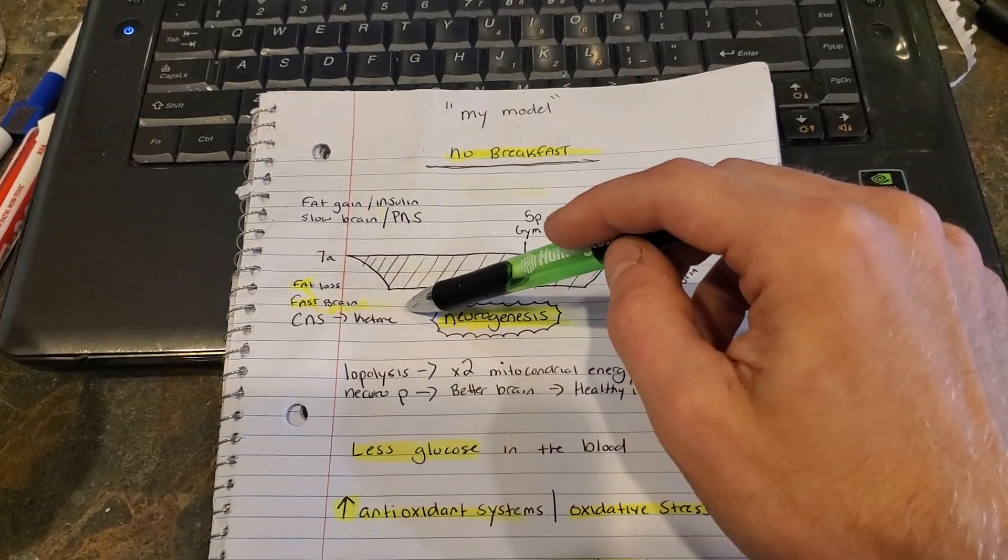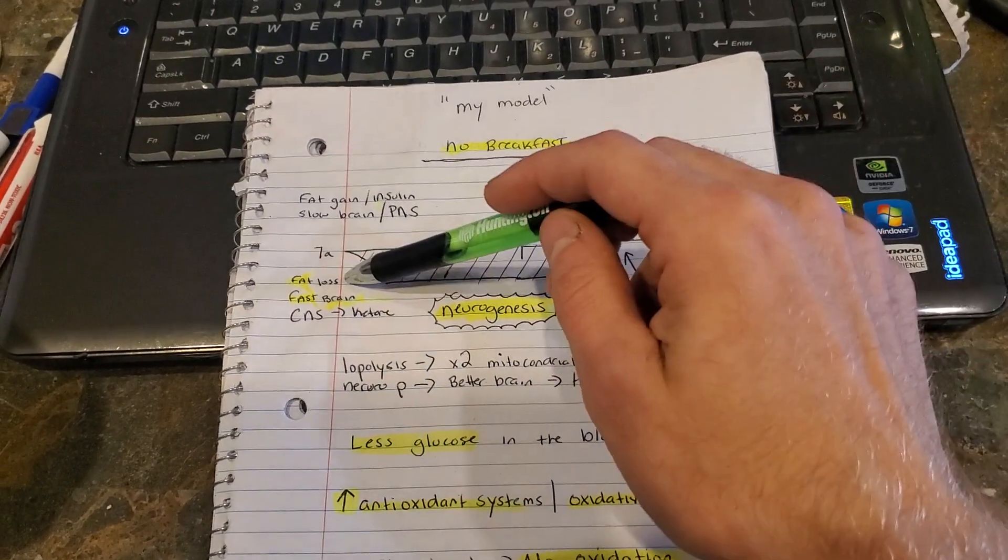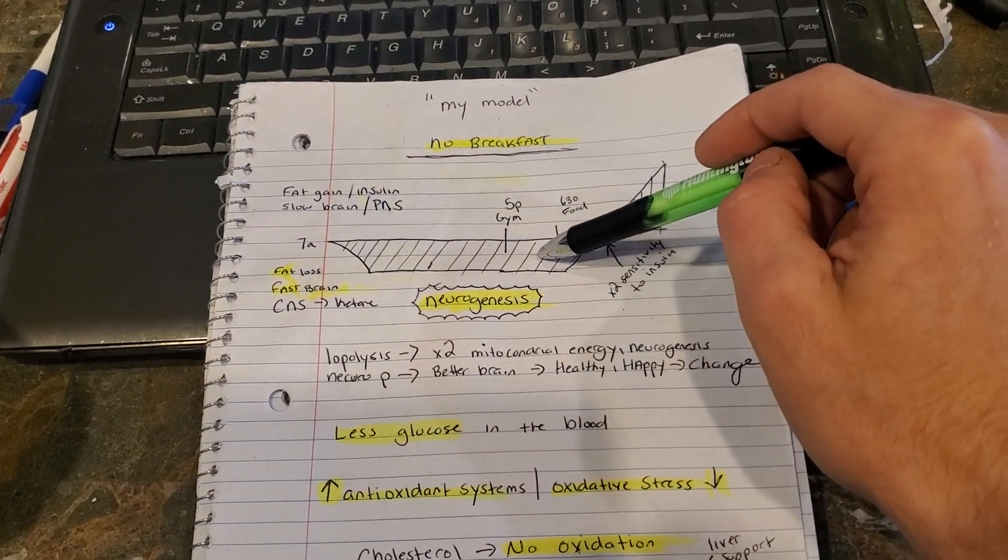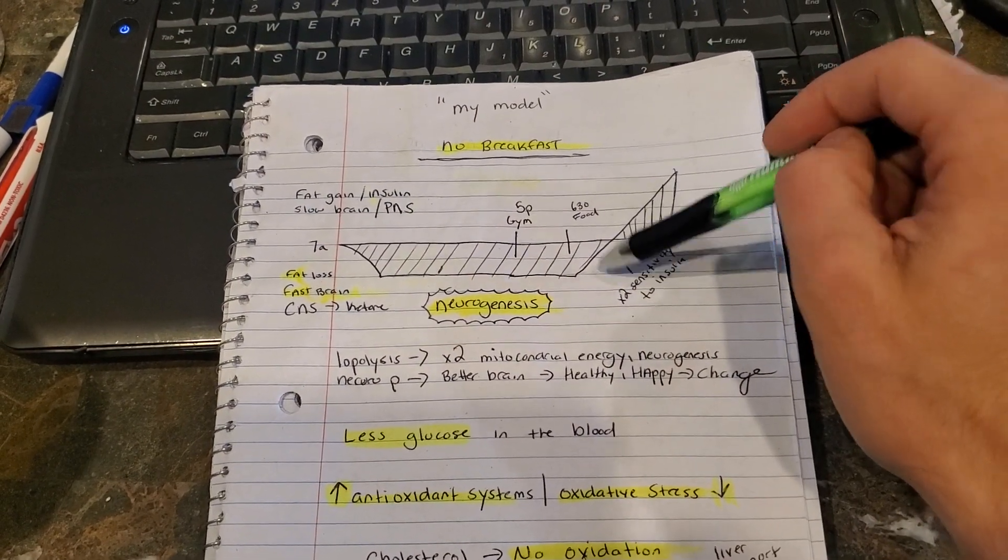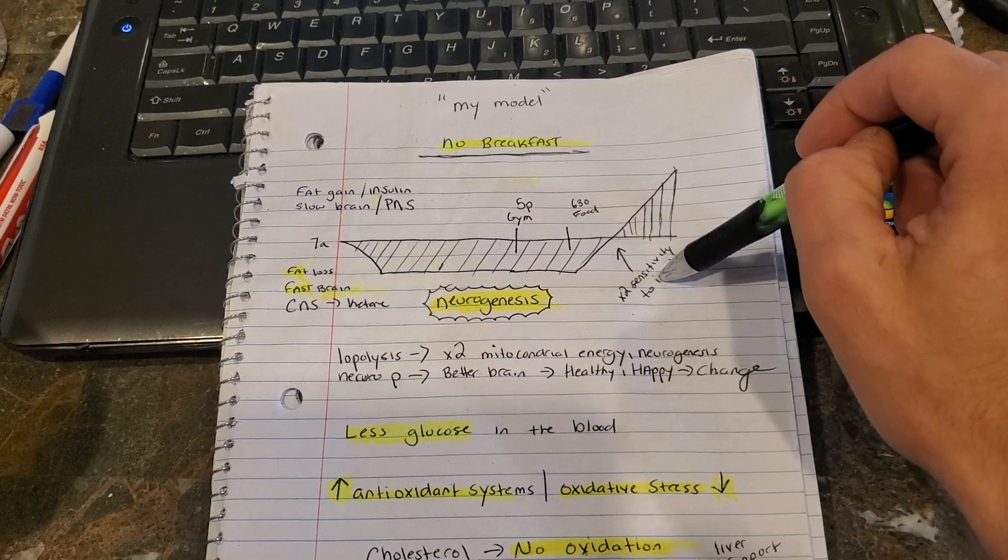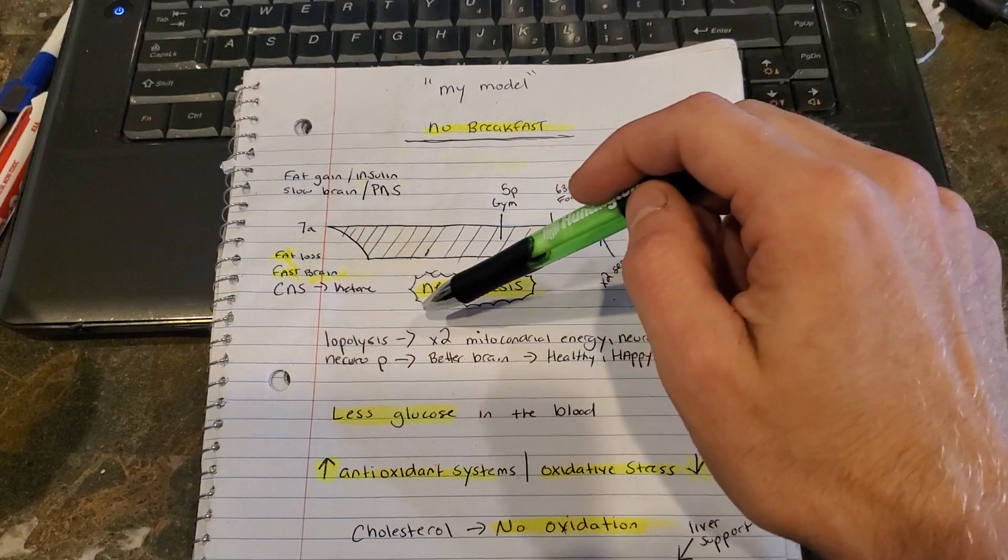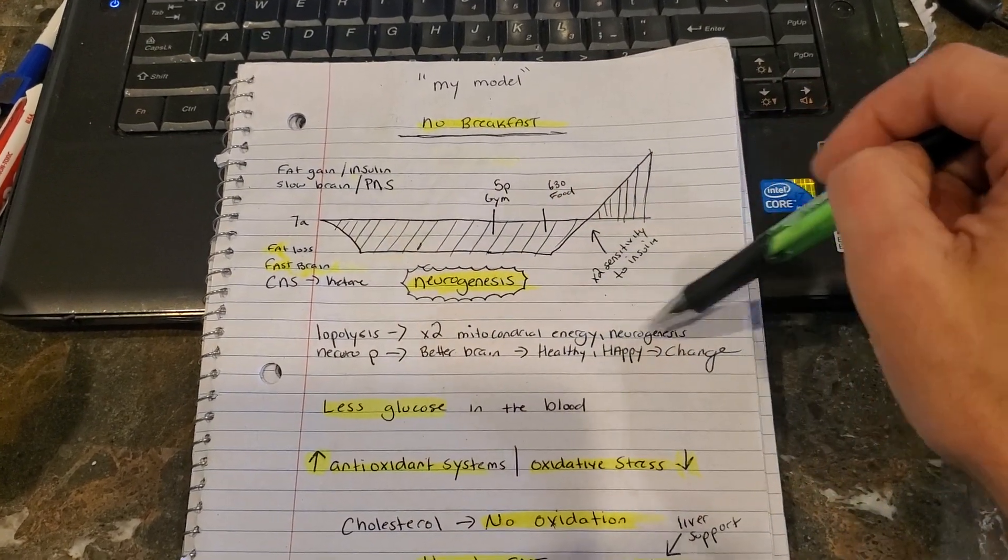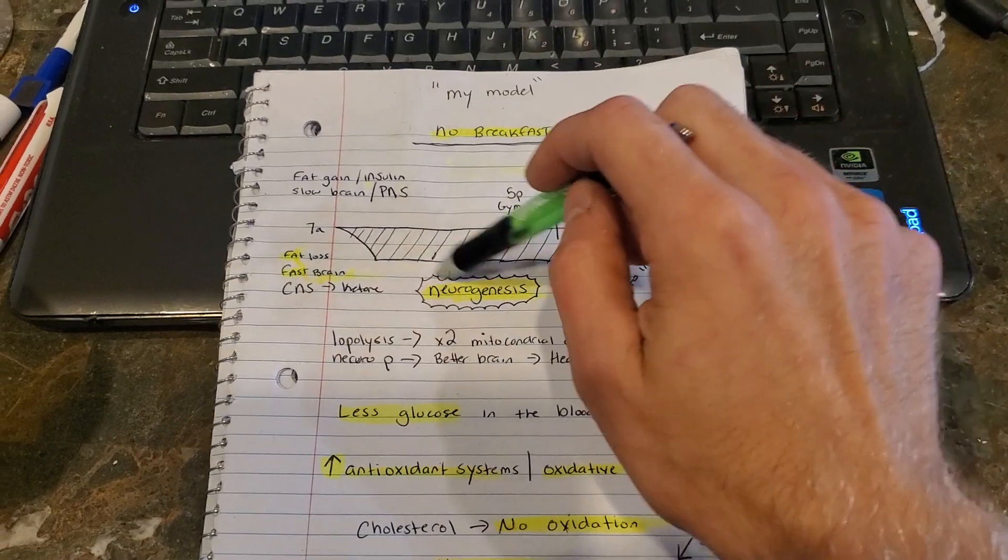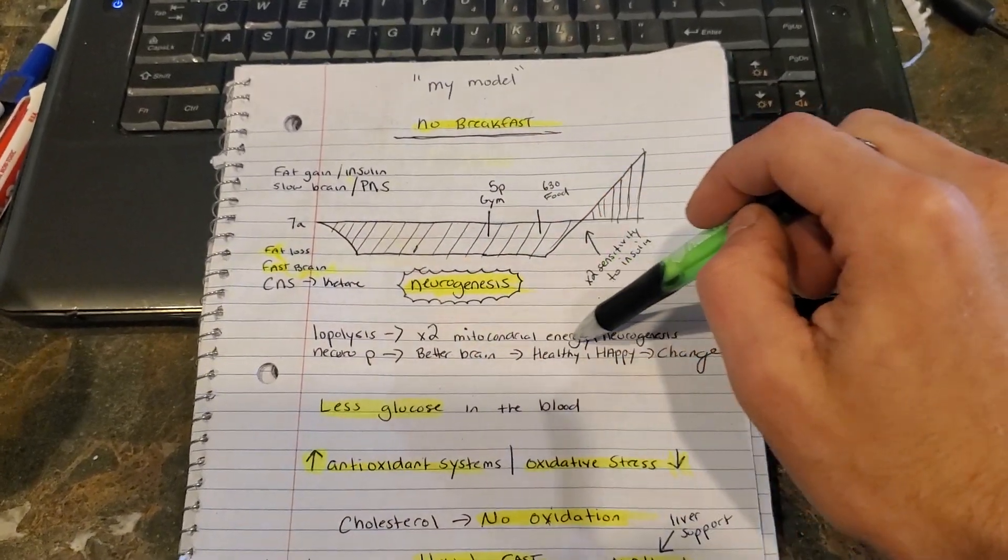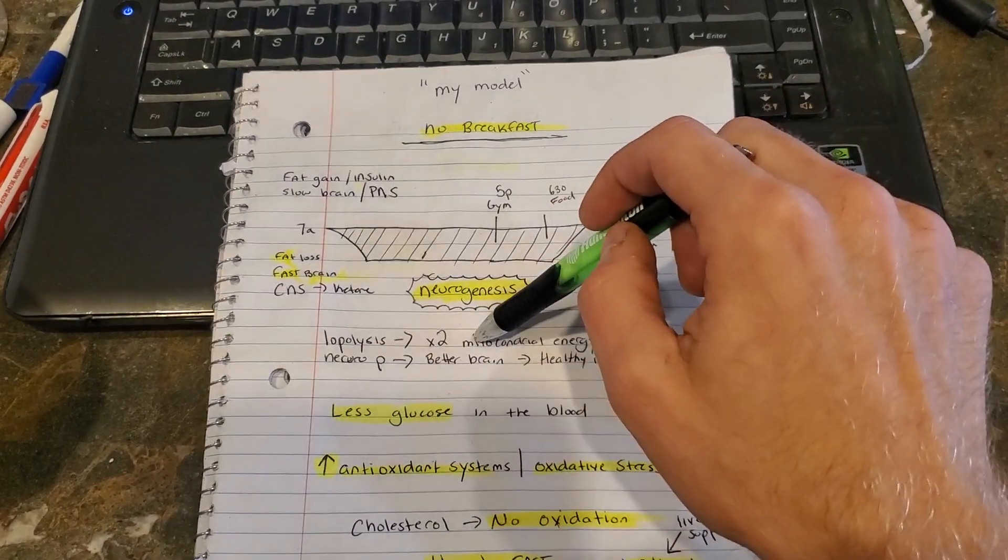So you can still have carbs and sugars, the refined versions, but the only time you should be eating them is right after you work out. If you fast all day, that's going to open up your sensitivity to your cells. And if you work out, that's going to open up your sensitivity. So twice as sensitive to insulin, so your body's going to utilize it rather than use it to promote fat. Lipolysis also, when you're running on ketones, you're going to have twice the mitochondrial energy inside of your body. So production of new brain cells and neuroplasticity are tied into fasting.